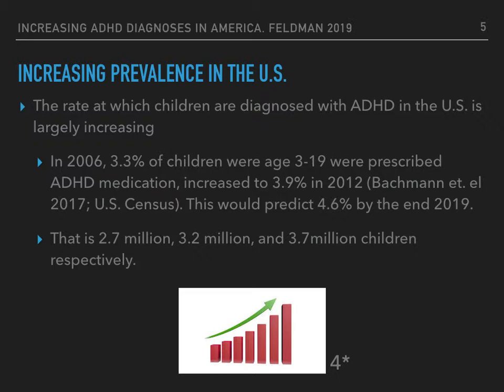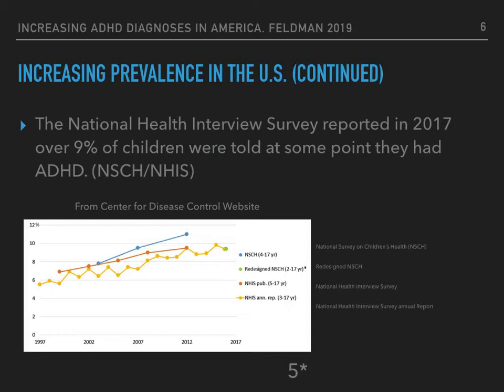If this trend were to continue, we could predict relatively well that 4.6% of children would be prescribed ADHD medication by the end of 2019. Reviewing the graph, we can compare it to the previous research. That data showed stats of about 3 to 4% of children taking ADHD medication, while this graph tells us how many in a survey were told at some point in their lives by a professional that they had ADHD. The number raised from about 6% in 1997 to over 9% in 2017 — a 50% increase.